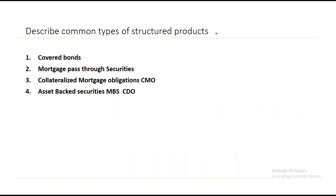There are four common types of structured products: covered bonds, mortgage pass-through securities, collateralized mortgage obligations (CMO), and asset-backed securities (ABS/CDO). Let us look into each product in detail.